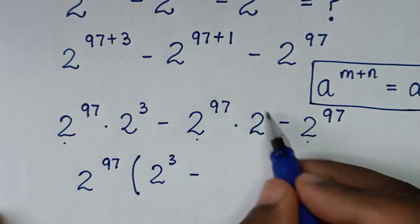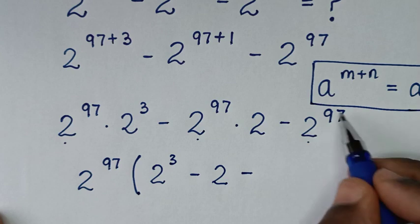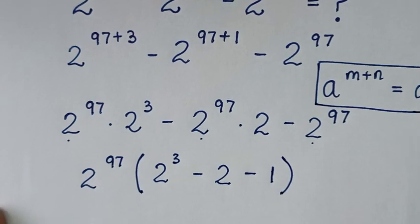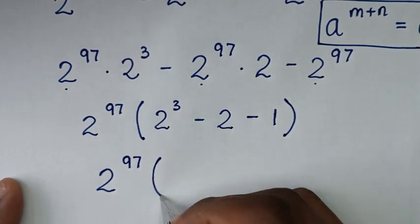Minus this divided by this gives 2. Then minus this 2 power of 97 divided by 2 power of 97 gives 1 in the bracket. Then it will be 2 power of 97 bracket.